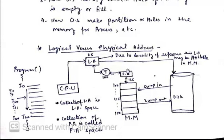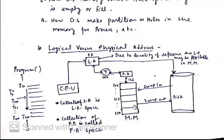Due to the locality of reference, we will search for the main memory first. If we search secondary storage, that means it is not in main memory. Since the CPU generates logical addresses continuously, the collection of all logical addresses is called the logical address space, and the collection of all physical addresses is called the physical address space.